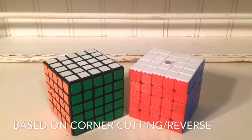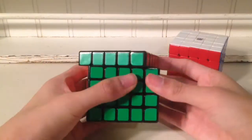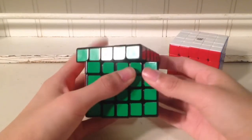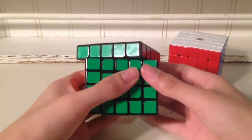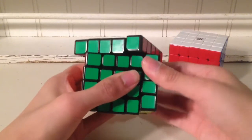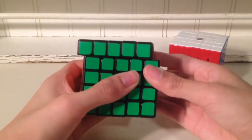The next category we're going to be covering is corner cutting. The MF5 can corner cut about a cubie, and can reverse about a quarter of a cubie. It's very tentative sometimes.